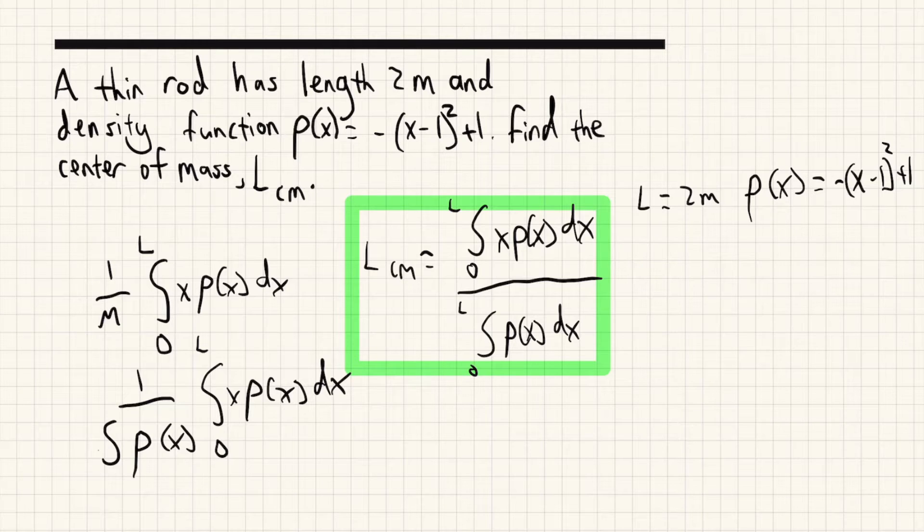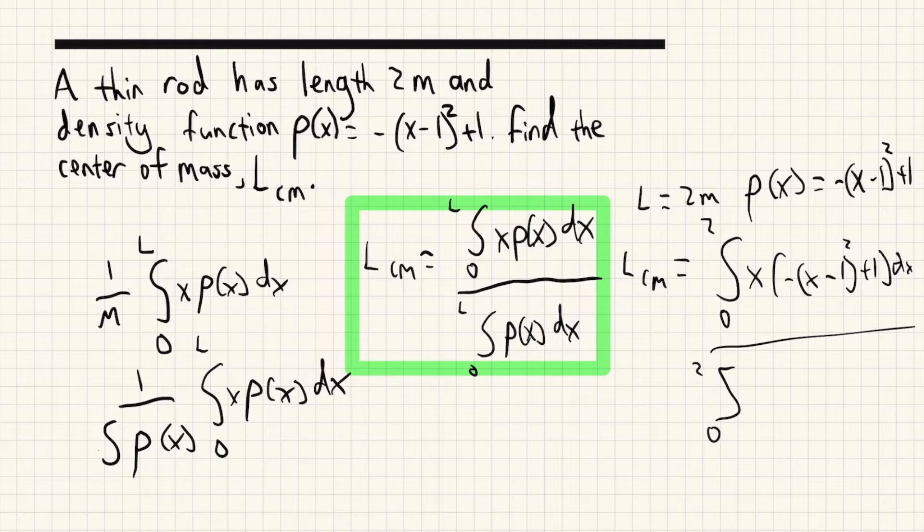So we should have LCM equals to the integral from 0 to 2 of x times (-(x-1)² + 1) dx divided by the integral from 0 to 2 of (-(x-1)² + 1) dx.